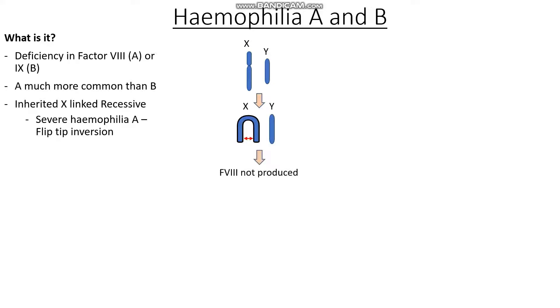In the case of haemophilia B, this may be a missense or a nonsense mutation in the factor IX gene. Whatever the case, we end up not producing enough factor VIII or factor IX.